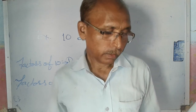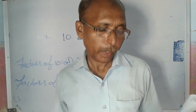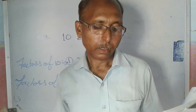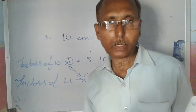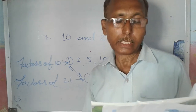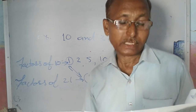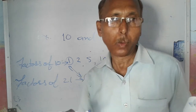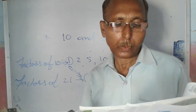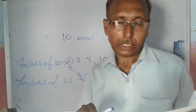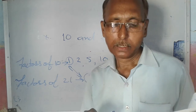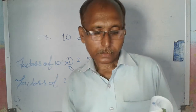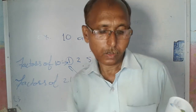Some other pairs of co-prime numbers are: 3 and 8, 4 and 9, 21 and 22, 22 and 23, 23 and 24, 28 and 29. These are all called co-prime numbers.